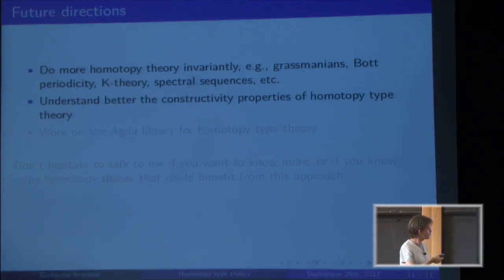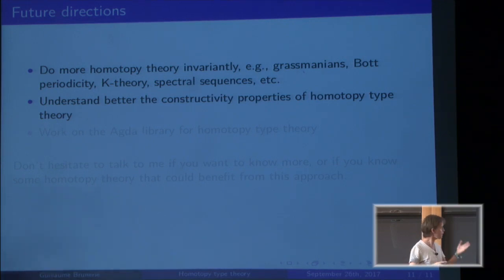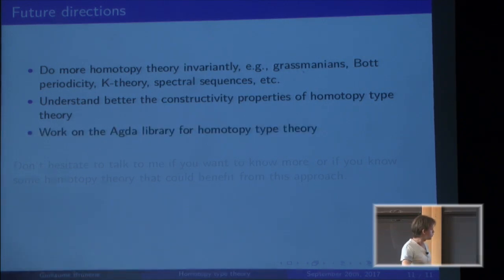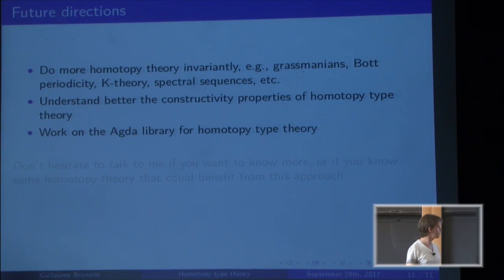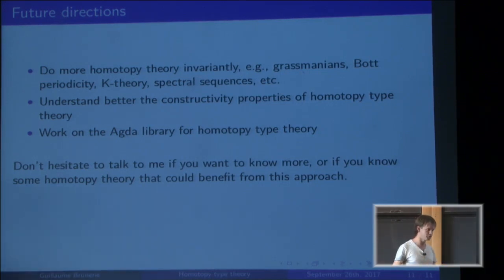I would also like to better understand the constructivity properties of homotopy type theory. There are problems related to the fact that type theory is supposed to be constructive — whenever you prove that something exists it gives you an algorithm to compute it — but this is not yet well understood in the framework of homotopy type theory. I also want to work on the Agda library for homotopy type theory. Agda is a proof assistant to formalize mathematics in this setting. Don't hesitate to come talk to me if you want to know more, or especially if you know some homotopy theory that might fit well into this framework.